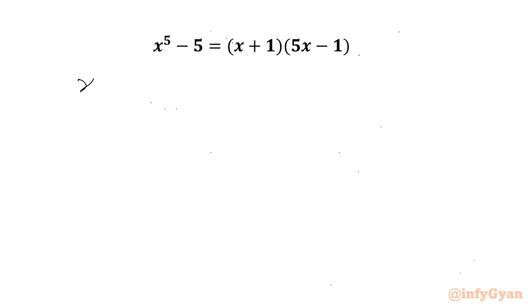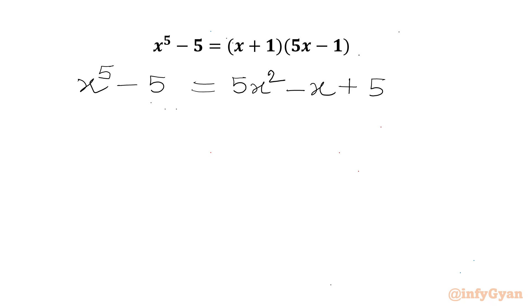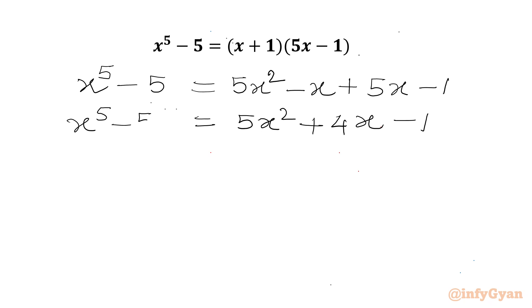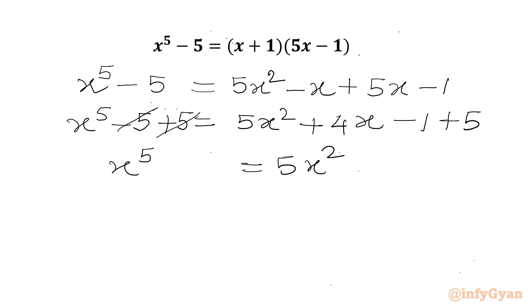Let's get started. I will simplify the RHS first. Expanding (x plus 1)(5x minus 1) gives 5x squared plus 5x minus x minus 1, which simplifies to 5x squared plus 4x minus 1. Now we will add 5 to both sides, so the minus 5 and plus 5 cancel, giving us x to the power 5 equals 5x squared plus 4x, since 5 minus 1 is 4.